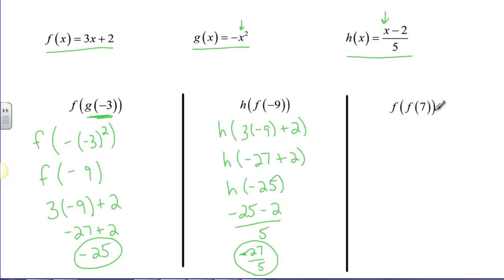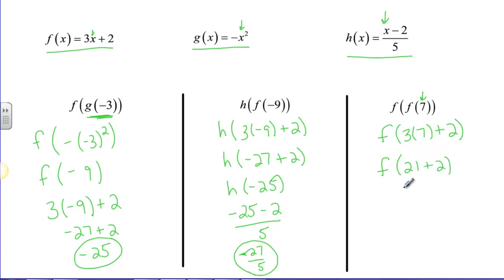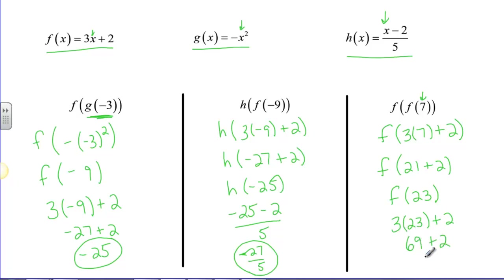The last one is f of f of 7. First, evaluate f of 7: 3 times 7 plus 2 equals 21 plus 2, which is 23. Now evaluate f of 23: 3 times 23 plus 2 equals 69 plus 2, which is 71. So 71 is our final answer. I hope that helped — there are a couple of examples of how we compose functions using variables and also how to evaluate compositions using actual numbers. Thanks for listening.